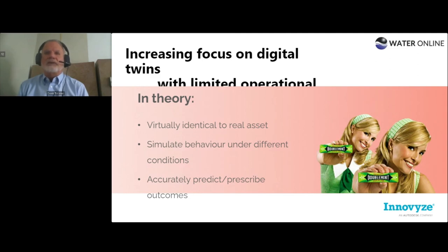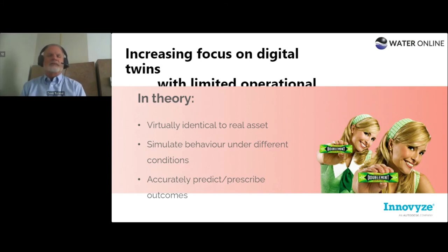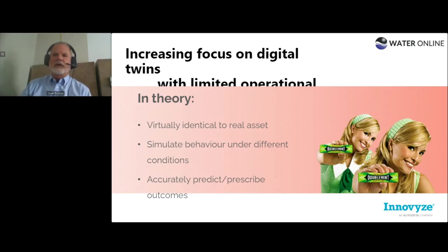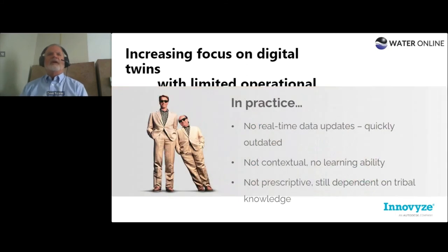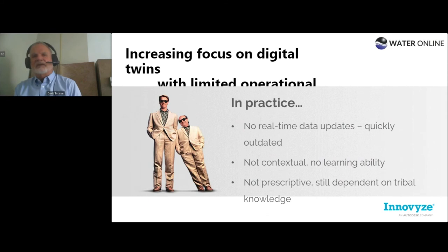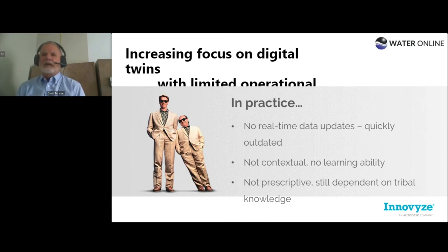In theory, the digital twin is like the old gum commercial — it's virtually identical, it definitely simulates the same behavior. You're really wanting to accurately predict and prescribe outcomes. But in practice, many times it's more like Danny DeVito and Arnold Schwarzenegger in Twins — they are not the same, there's no real context between the two, they're not very prescriptive and act independently. What's missing is trust: can the digital twin accurately show what has happened, what's happening now, and what will happen in the future?